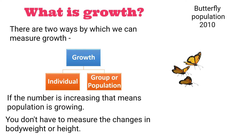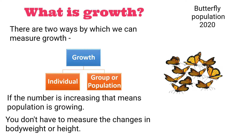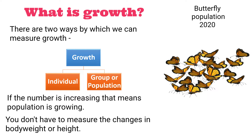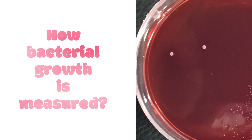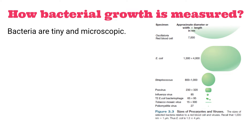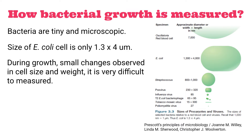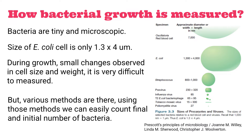Here, you don't have to measure body weight or height — you have to count only the initial and final number of individuals. In this way, we generally determine the growth of a city, tiger population, or number of plants in a forest. We know that bacteria are also tiny and microscopic, and during growth, the changes in size or weight of a single microbe are negligible. Various direct and indirect methods are available to easily count the number of bacteria in a population. So when we use the term bacterial growth, that actually indicates the increase in number only.